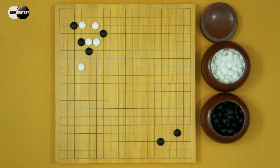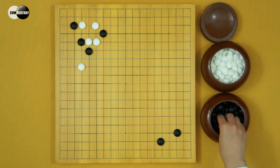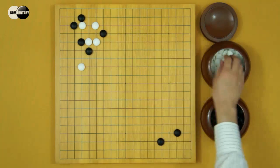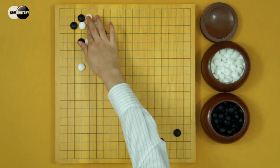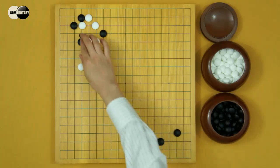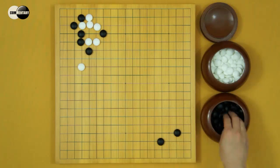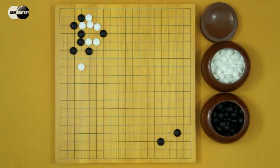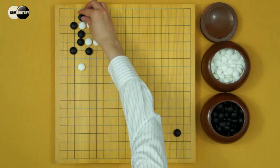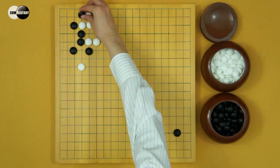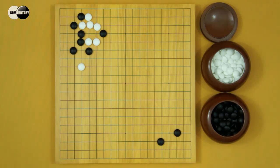If White jumps and follows joseki, Black will harm you. If White hane, Black atari, White connects, Black kosumi. Now relative to joseki, Black made this exchange. This exchange is very good for Black.